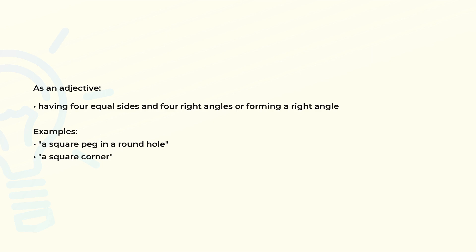As an adjective, having four equal sides and four right angles or forming a right angle. Examples of use: a square peg in a round hole, a square corner.